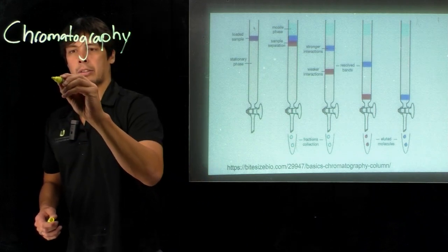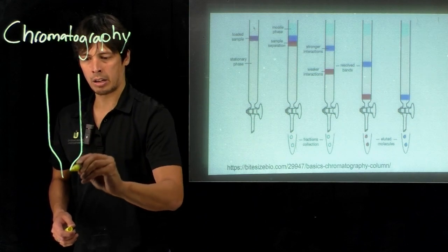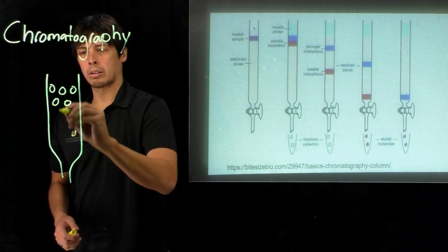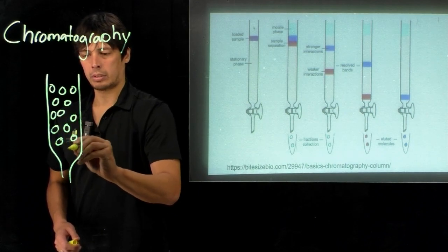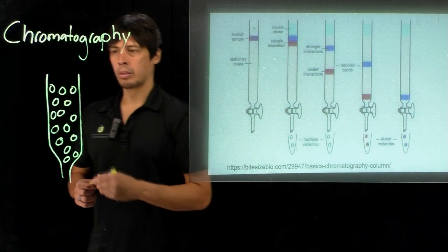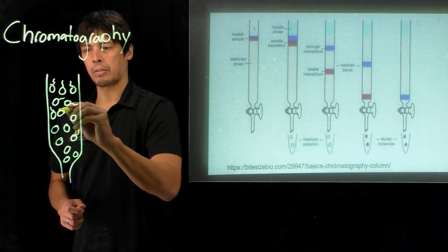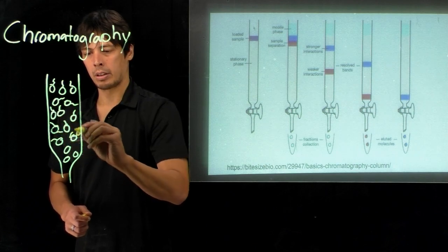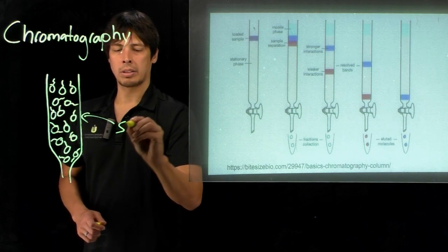In chromatography, we have a column that we pack with beads or what we call resin. This is a solid support for functional groups. Sometimes we can add charged functional groups to this or hydrophobic functional groups, depending on what we're trying to separate. This solid support is called the stationary phase.